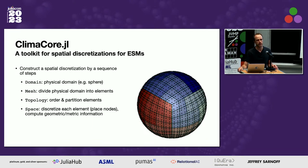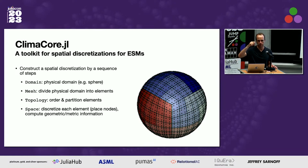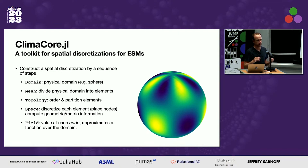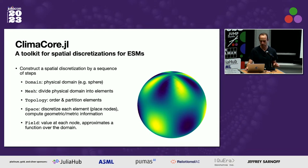Then we define one more thing called a space. We use the term space because the analogy is a mathematical vector space. Basically, it's how we actually discretize the whole thing — we put physical nodes, physical locations on the thing. We compute spatial geometric information like how far things are apart, partial derivative terms, things like that. Once you have that, you can define a field: at every one of those nodes, you have a value, giving you an approximation of a function of your domain.